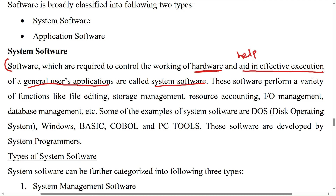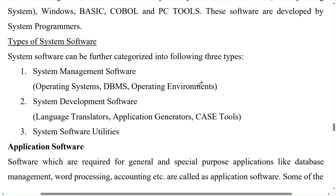Types of system software: system software can be further categorized into three types — system management software (like operating system, DBMS, and operating environments), system development software (like language translators, application generators, and CASE tools), and system software utilities.